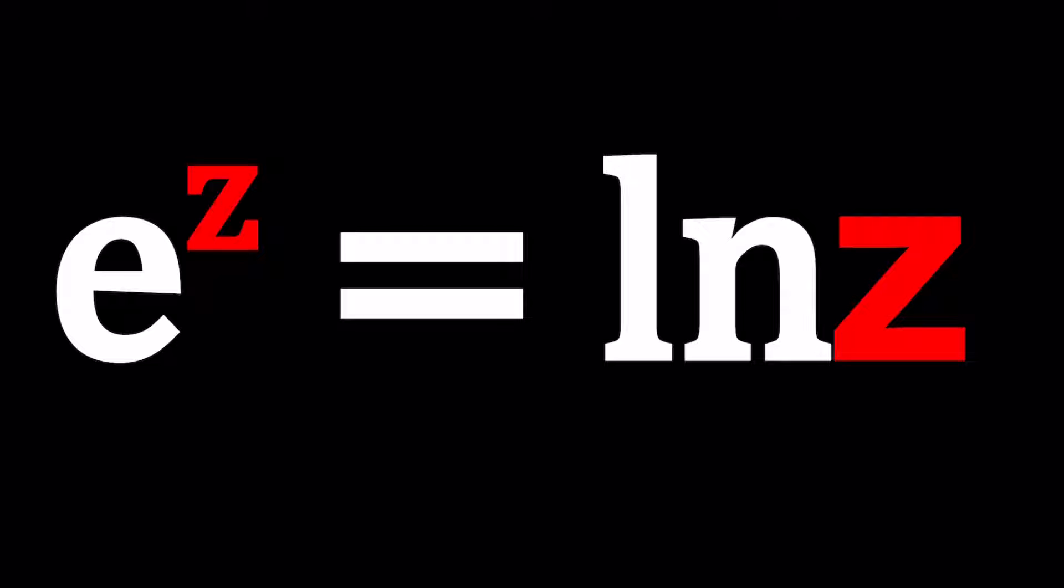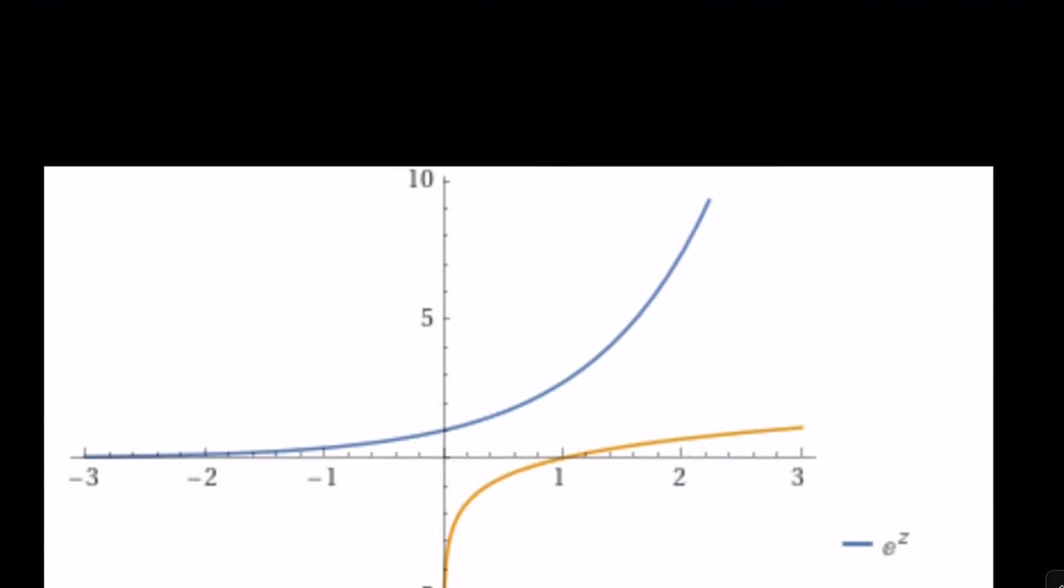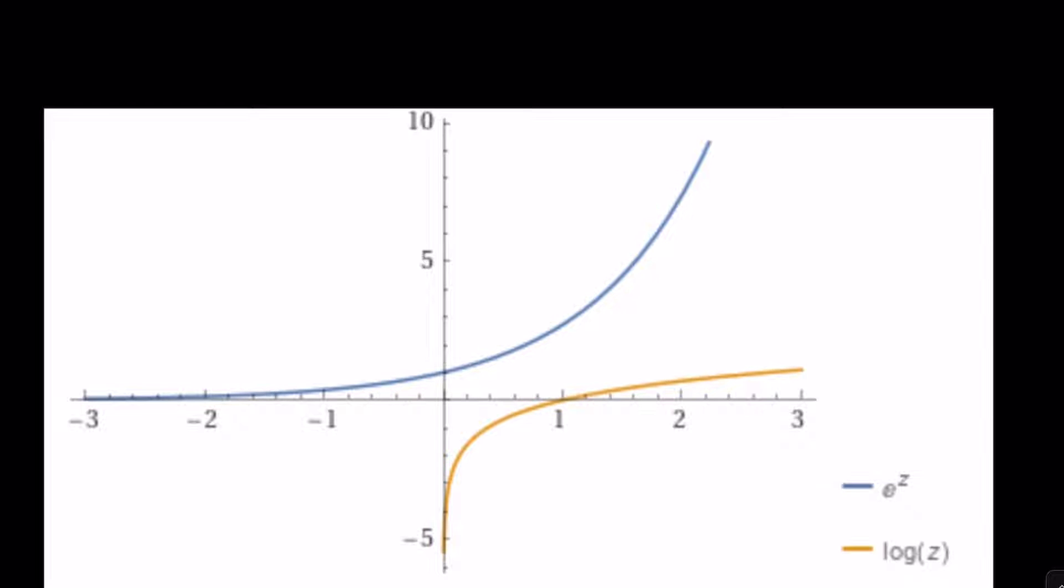We have e to the power z equals ln z, and we're going to start by looking at the graph of these two functions. When you check the graph of e^z and ln z, you realize that they do not intersect.